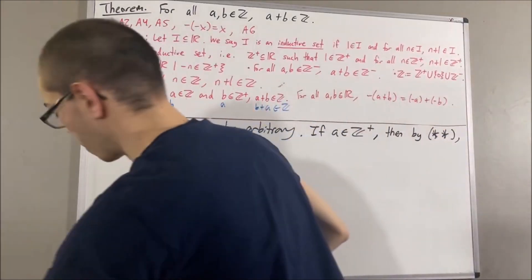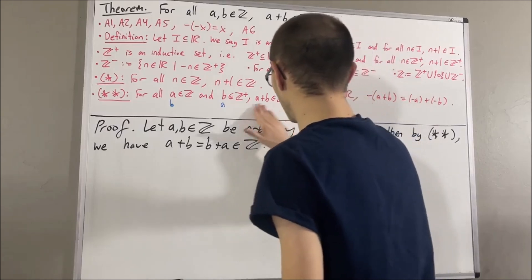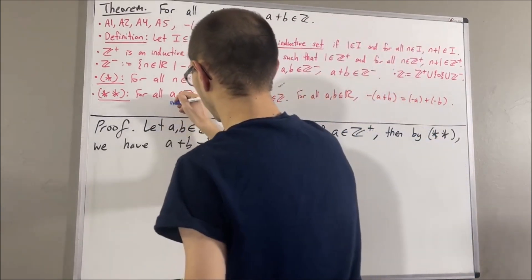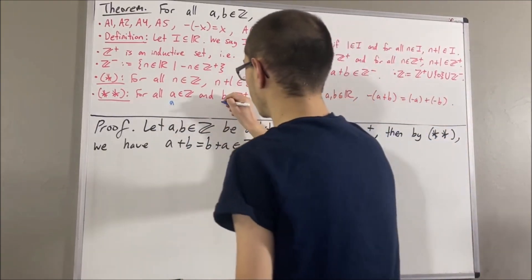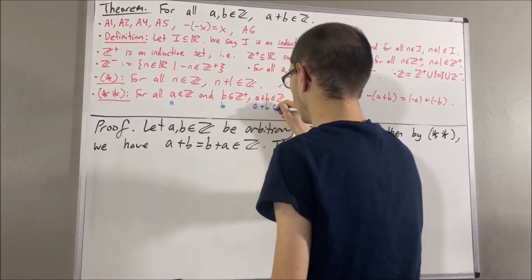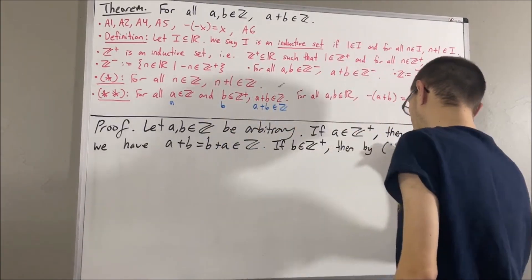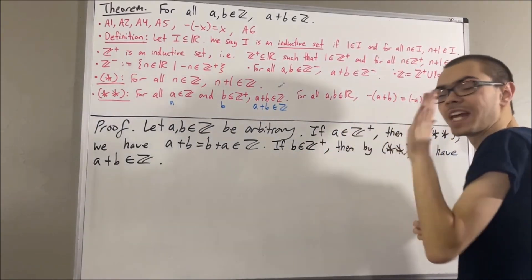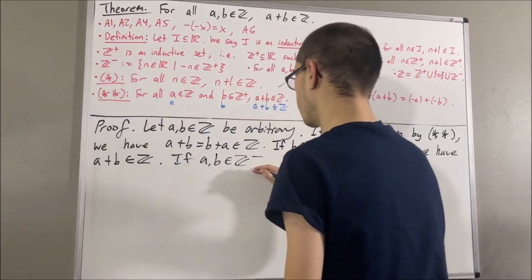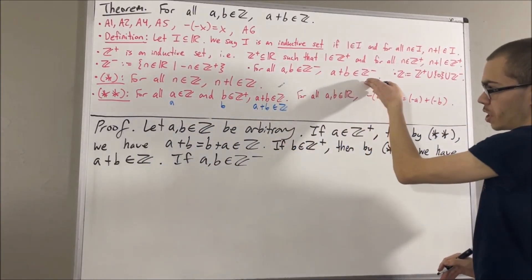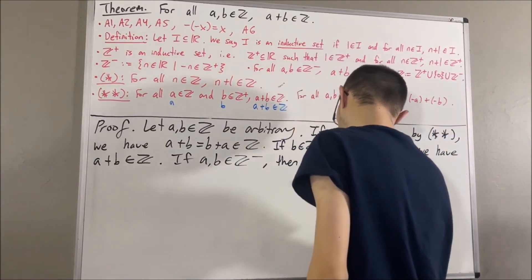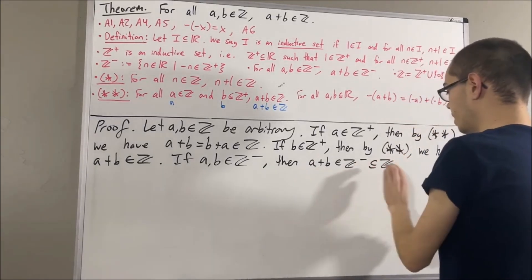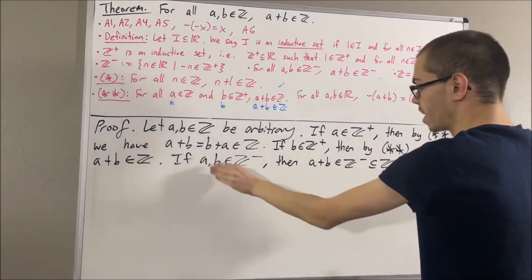What happens if b is a positive integer? If b is a positive integer, we apply star-star: since a is an integer and b is a positive integer, we have a plus b is an integer. That covers the case where b is a positive integer. What if both a and b are negative integers? We know that the negative integers are closed under addition, so a plus b is a negative integer. And the negative integers is a subset of the integers by definition. So a plus b is an integer. This covers the case where a and b are both negative integers.